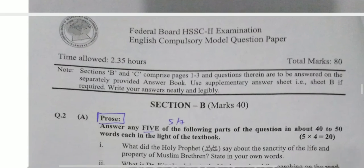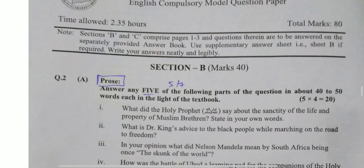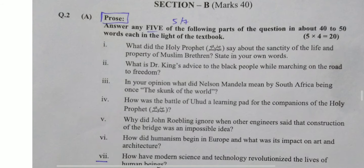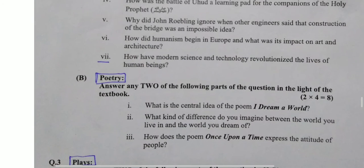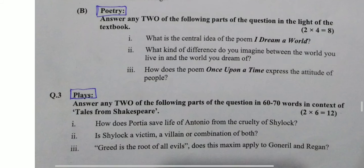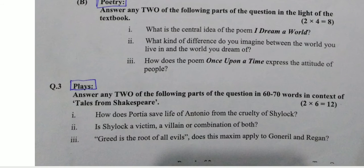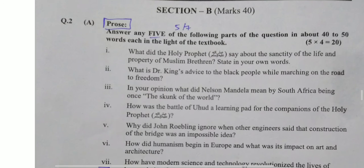Now, if we go to Section B — your Section B is of 40 marks, and Section C is also 40 marks. Section B is basically two parts: one is prose and one is poetry. Then one question will come from plays. If you have only one play, you will still need to prepare it thoroughly.